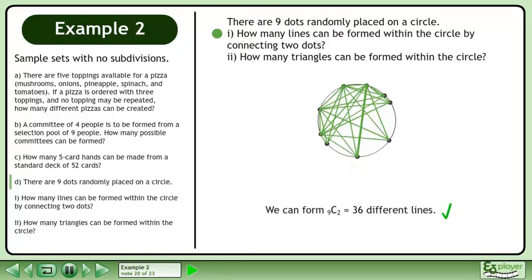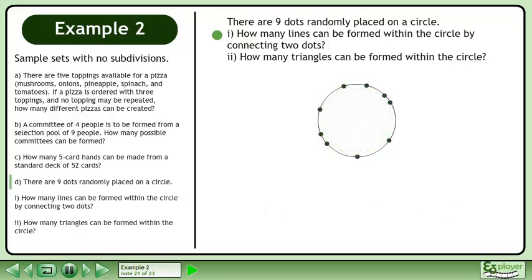We can form 9 choose 2 equals 36 different lines. Now we'll move on to the second question.